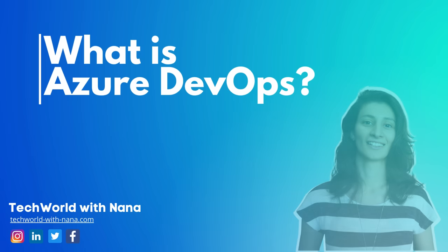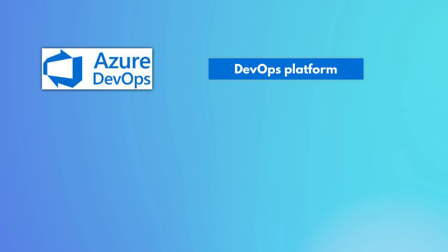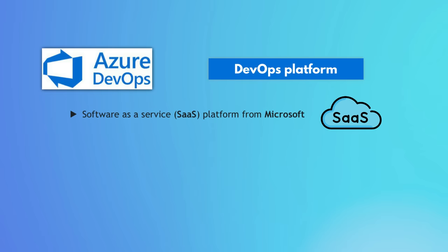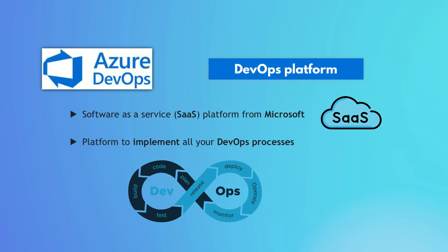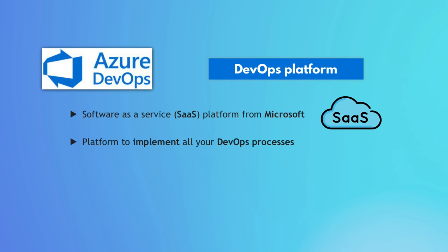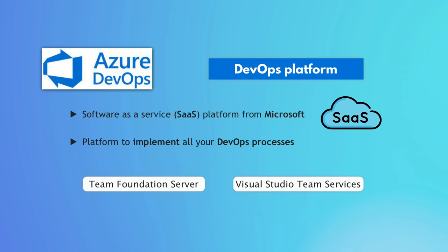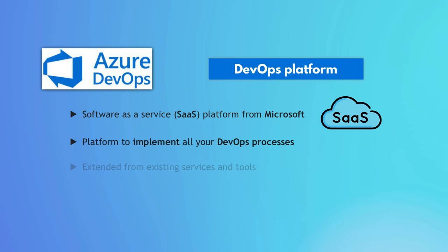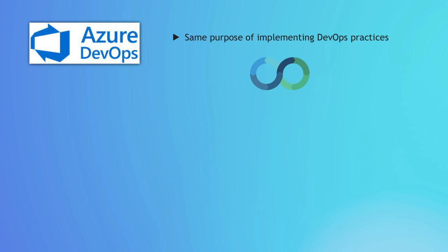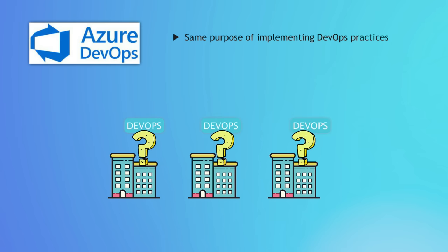What is Azure DevOps? As the name suggests, it is a DevOps platform — a software as a service offering created to basically be a one-stop shop for implementing all your DevOps processes for your project. It had many names before: it was called Team Foundation Server, then Visual Studio Team Services. It got these names because it extended from existing services and tools, and even though it served the same purpose, DevOps was still practiced by a smaller group of projects at that time.